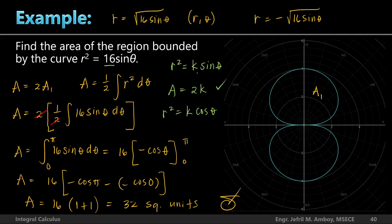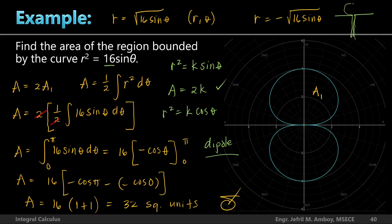This polar curve has real-world significance in antenna systems. When you study antenna systems, there is an antenna called a dipole. Every antenna has a radiation pattern. A dipole antenna has two poles — two antenna elements connected to a transmission line — and its radiation pattern resembles the shape of this polar curve. So this lemniscate-like curve represents the radiation pattern of a dipole antenna.